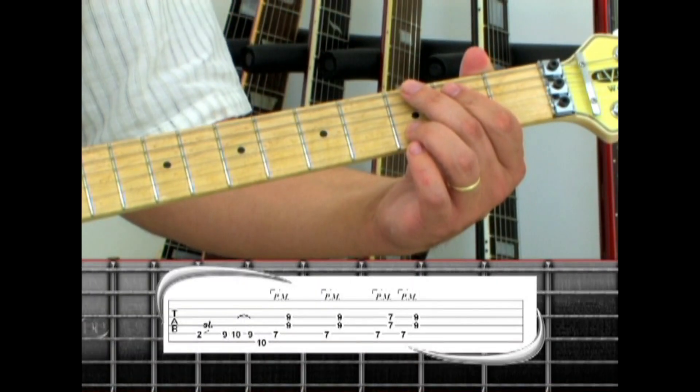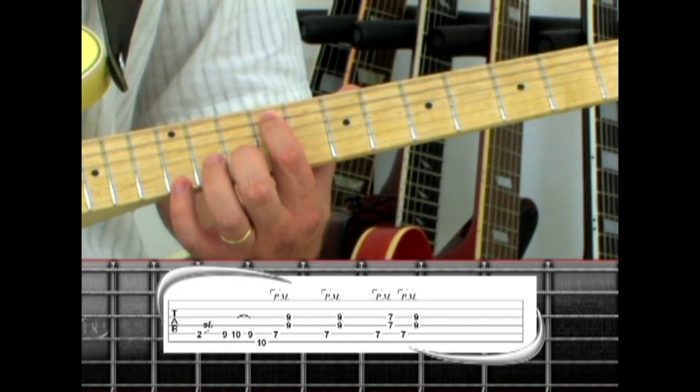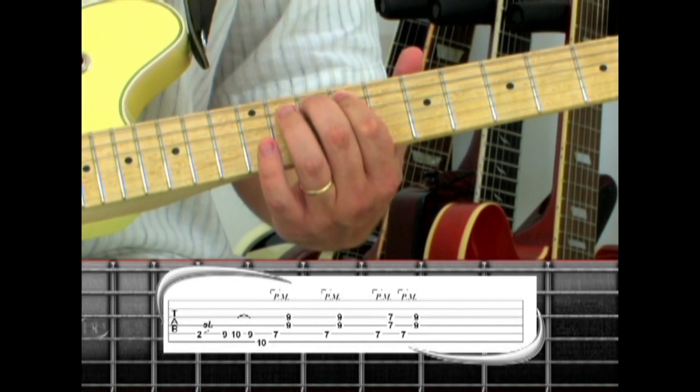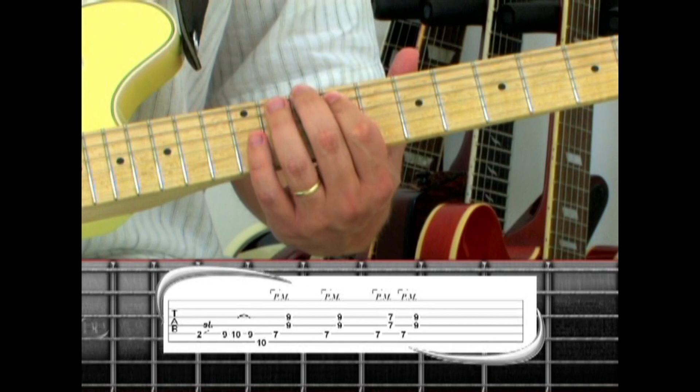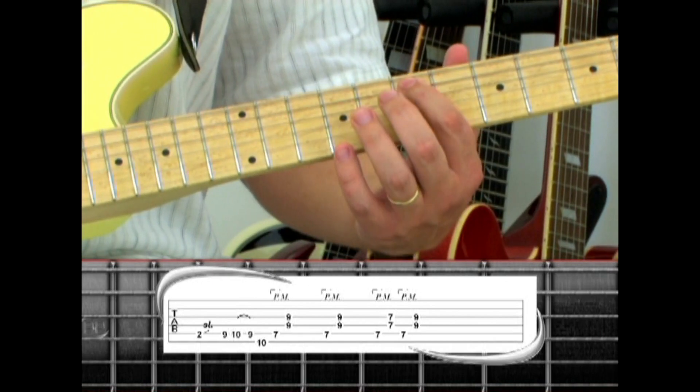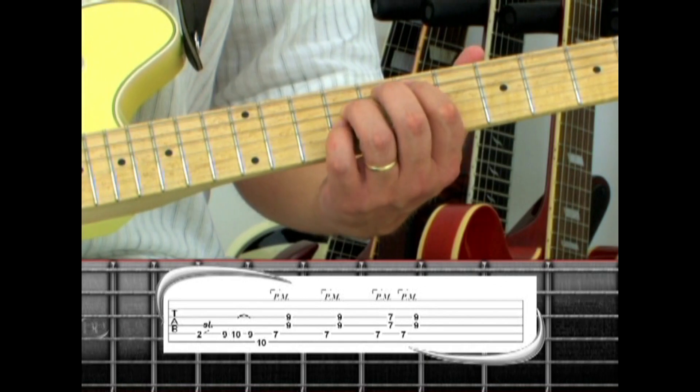Slide from the 5th string 2 up to 9, picking as you start off the slide. Play 10, pull to 9, to 6th string 10, hold an E5 power chord, 5th string 7, 4th string 9, with the ring and 3rd string 9 with the pinky.